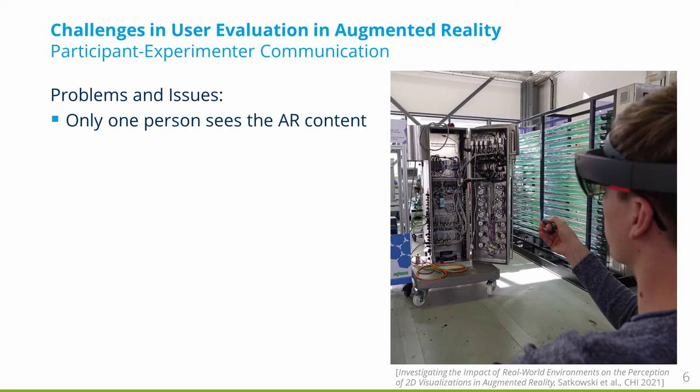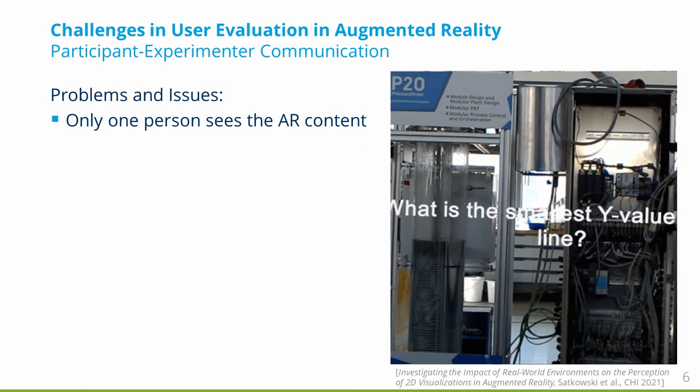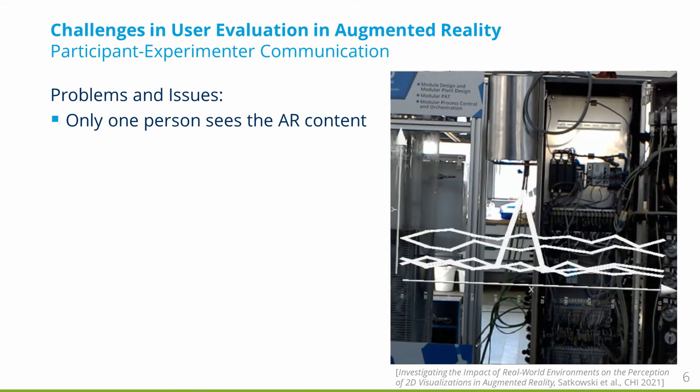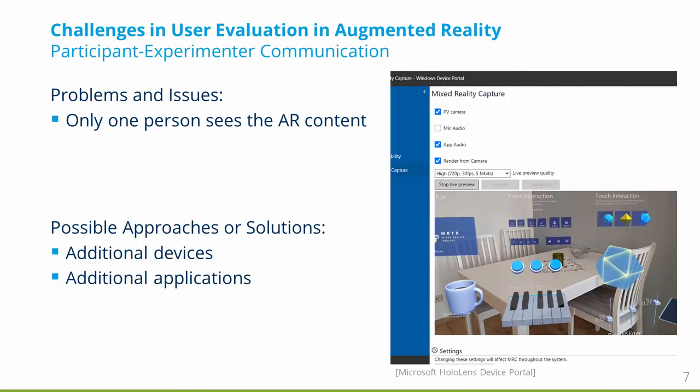Second, since the AR devices only allow the person wearing the device to see the virtual content, it is hard to communicate with the participants about what they see or do. Additional devices or applications can be introduced to let the experimenter see or at least track what the participant is doing. For example, the HoloLens device portal can be used to stream the view of the participant. However, this is quite taxing to the hardware and can reduce the overall performance of the system.